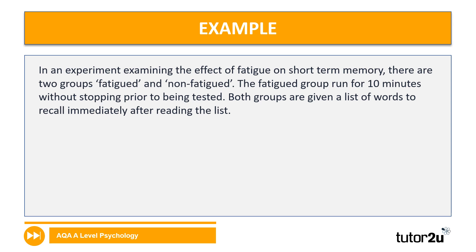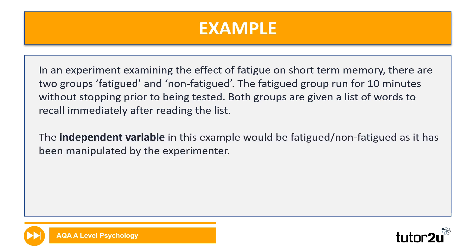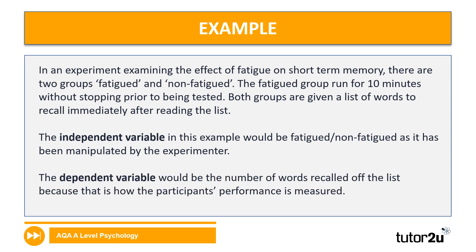Let's take a look. Remember, the independent variable is what the researcher changes; the dependent variable is what they're measuring. The independent variable in this example is the two groups — the fatigued and the non-fatigued — because this is what the researcher has directly manipulated. The dependent variable is the number of words they can recall off the list, because that's how we measure the participants' performance. So: IV is what the researcher directly manipulates; DV is what we measure.